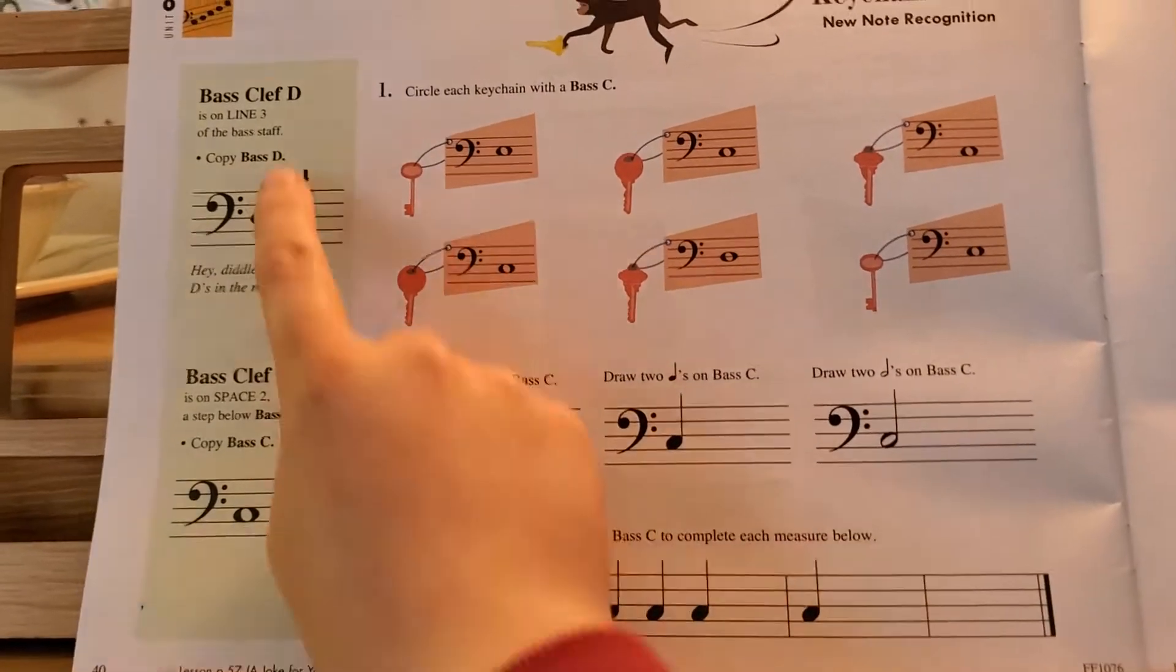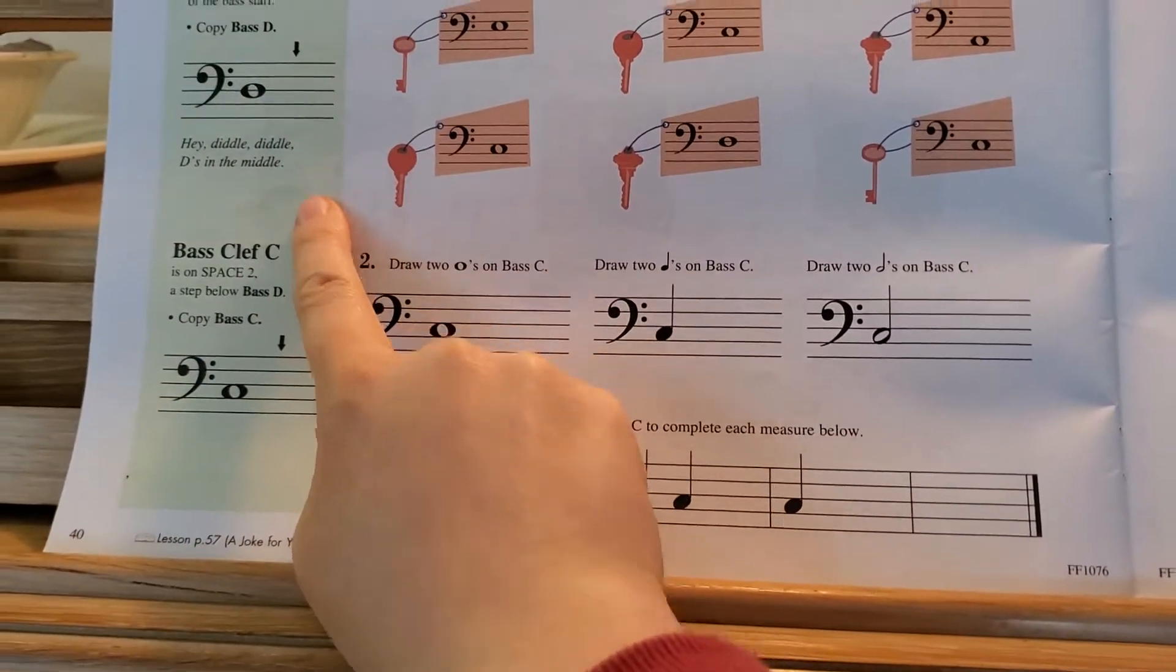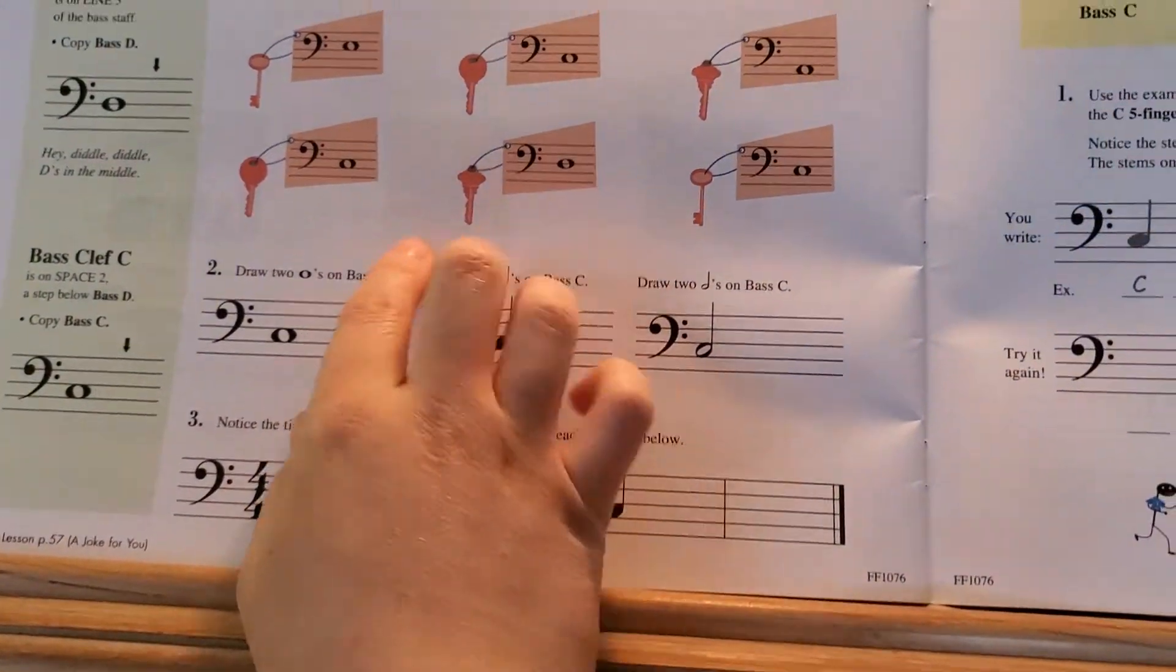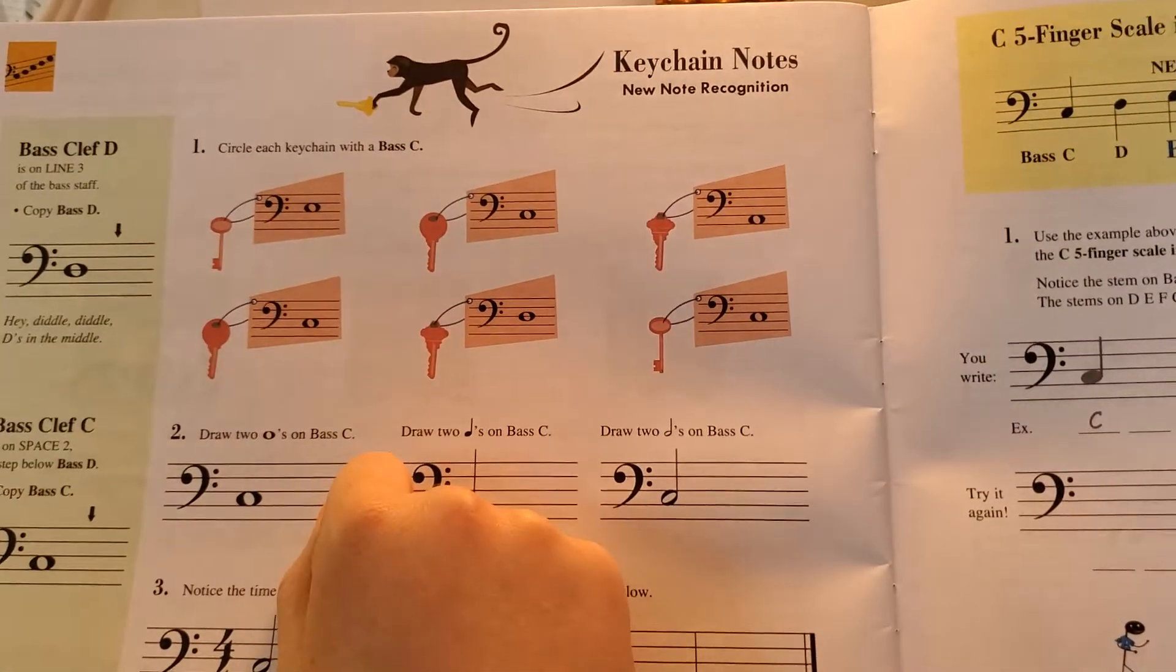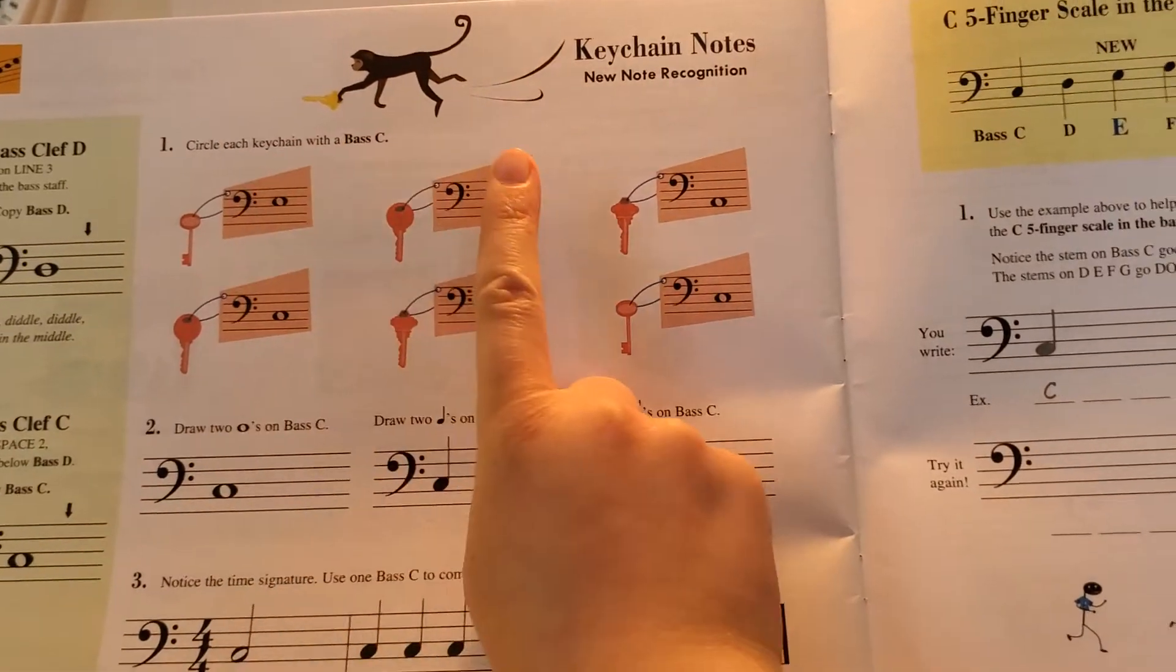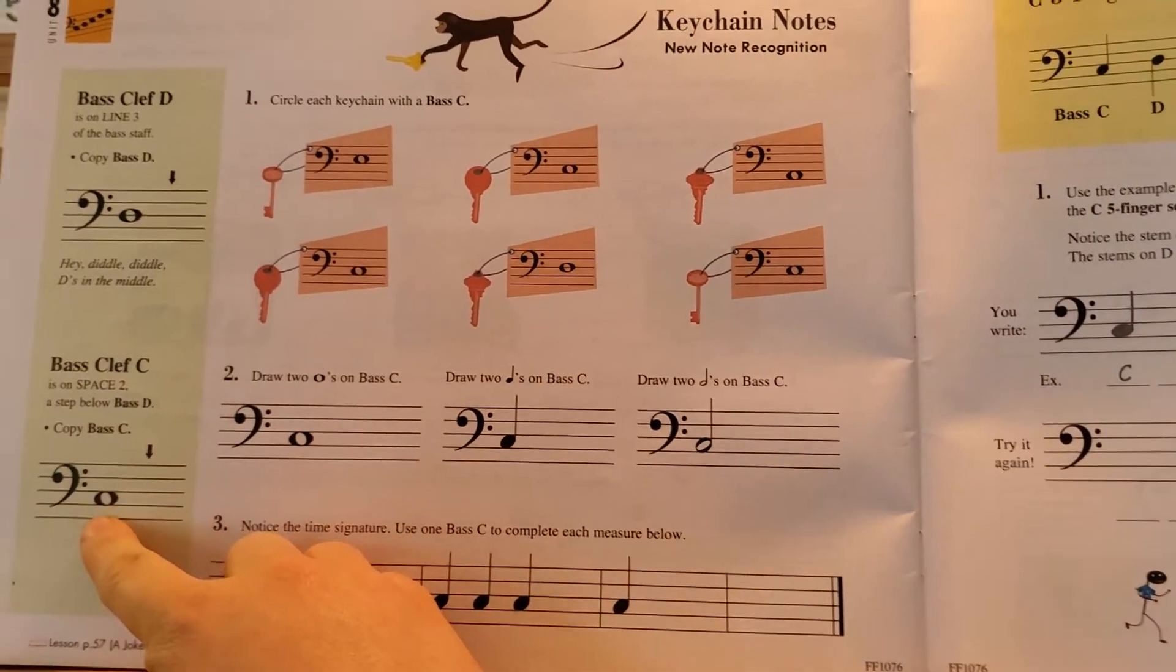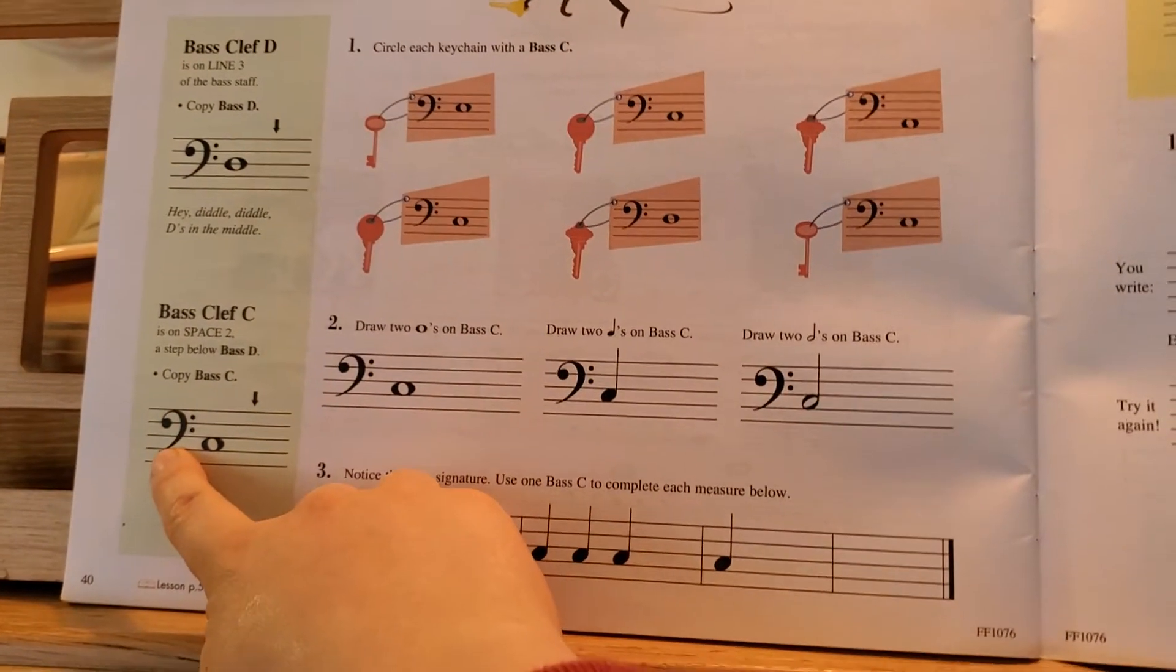So you can follow these. You can draw and copy bass D over here, bass C, and then they have a fun little thing where you get to circle each keychain with bass C in them. So she would have to go through and find the ones that look like C. So remember C looks like this guy - he's on the second space with the bass clef.